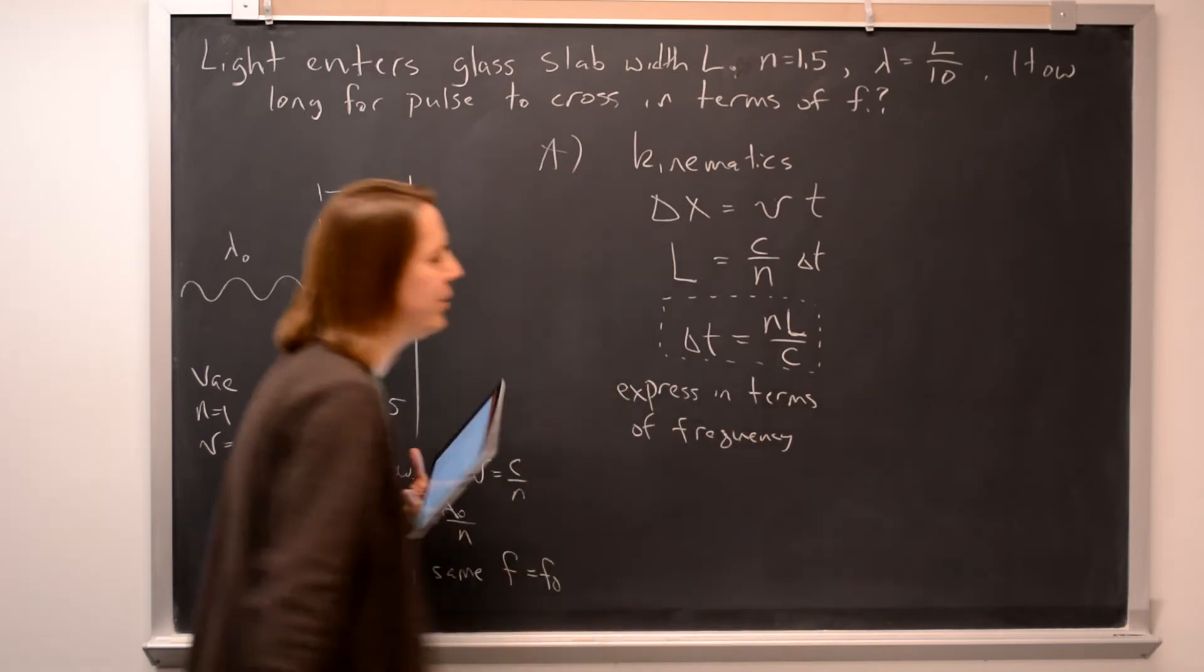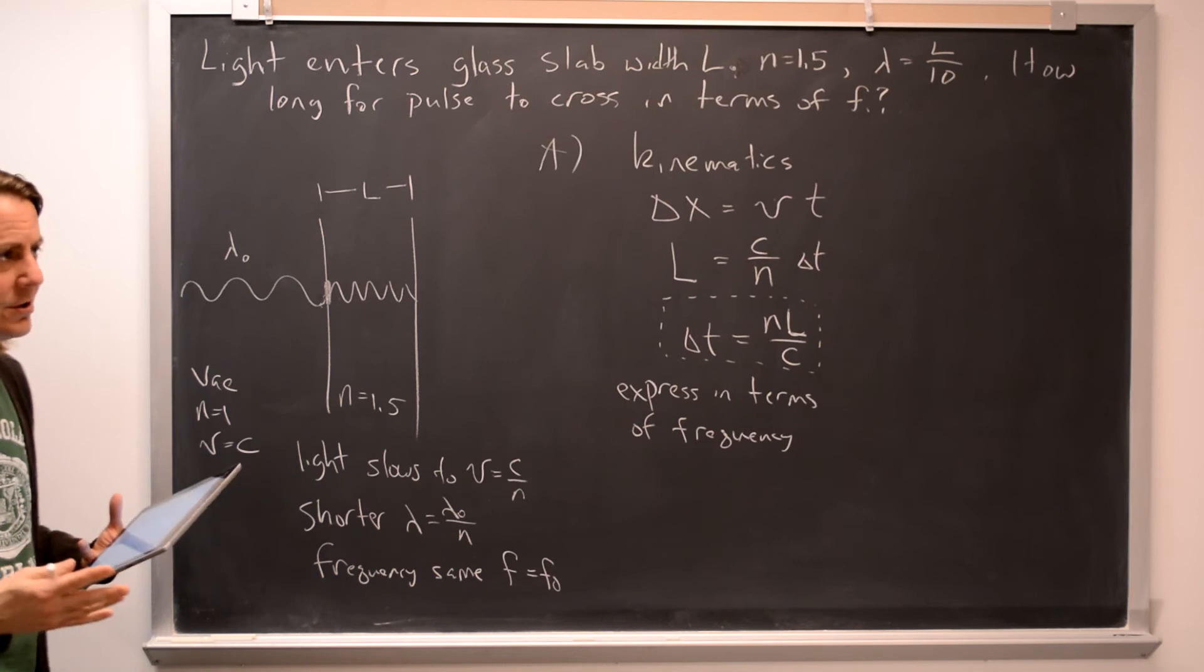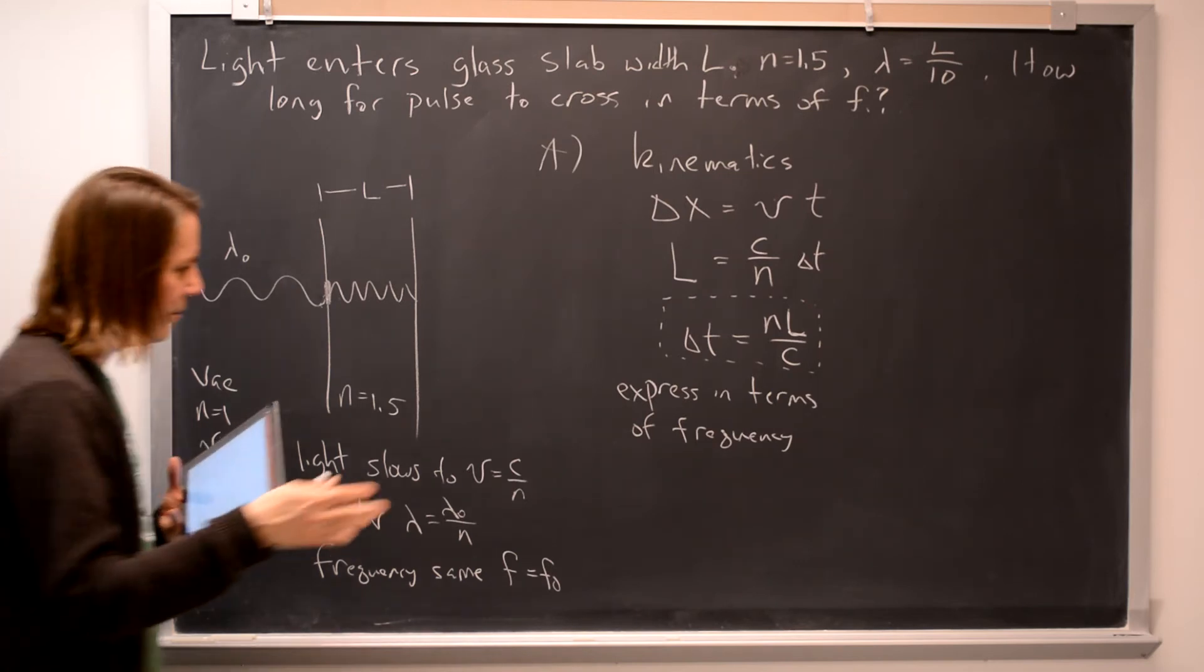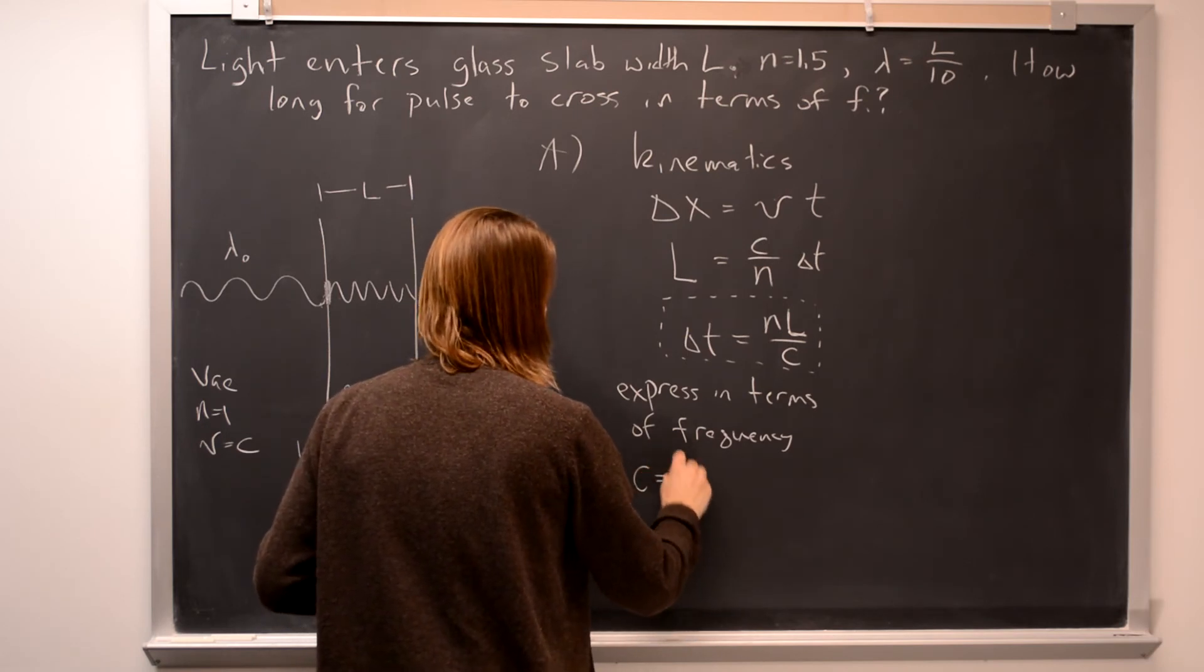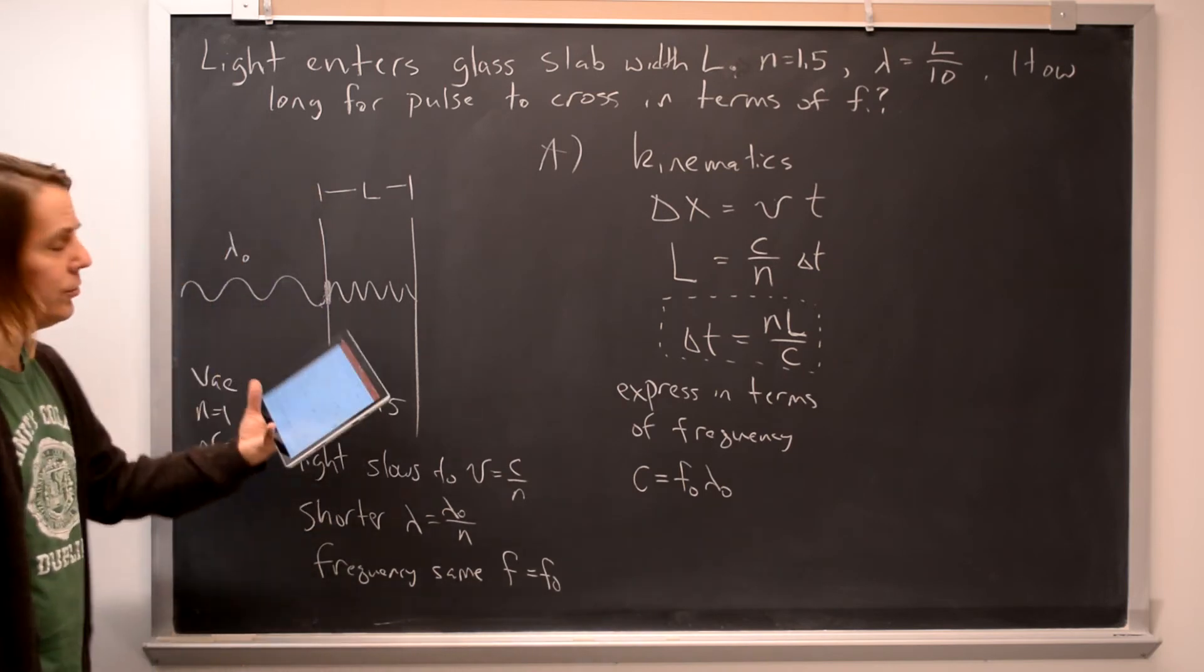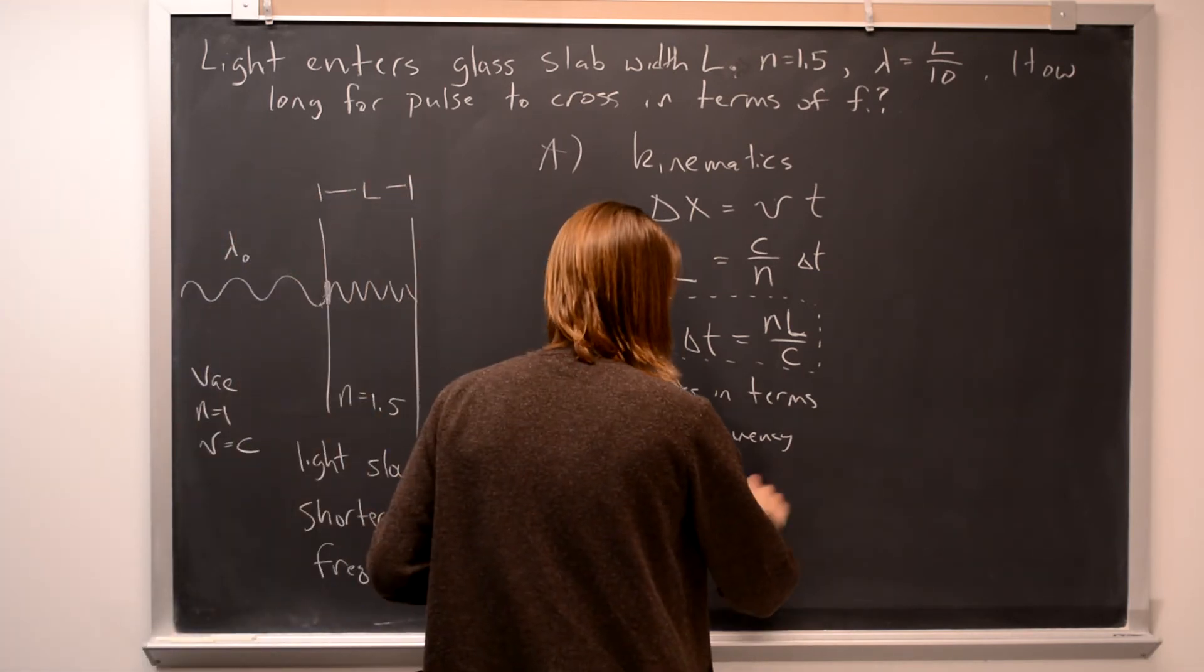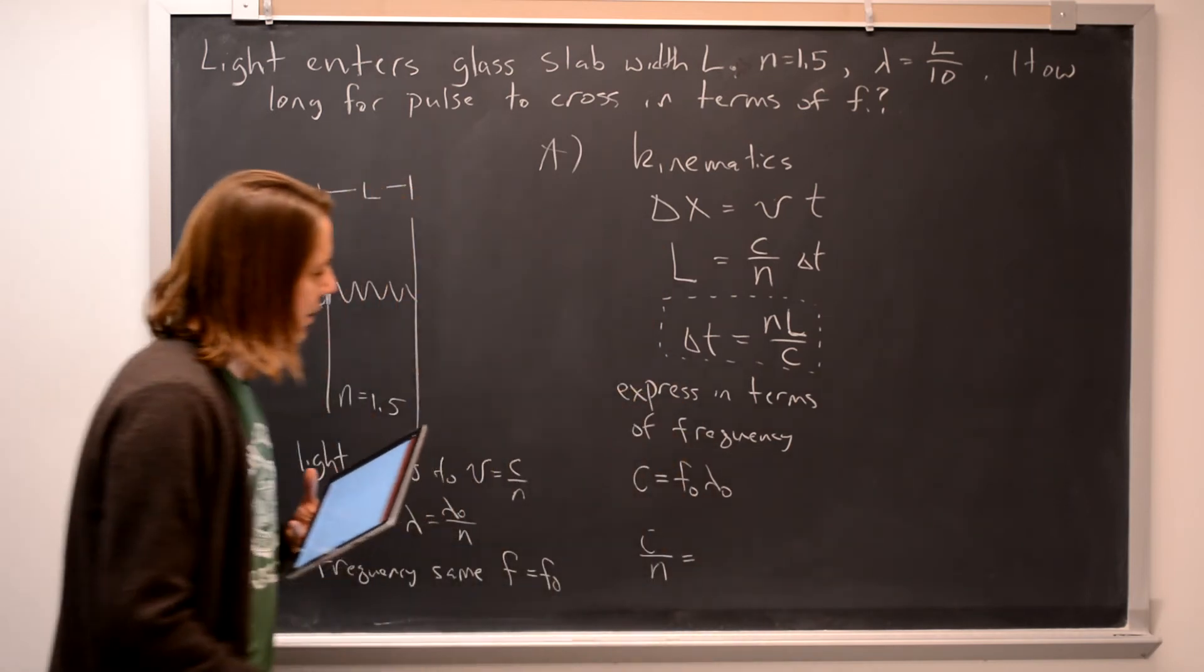So we were told nothing about the frequency, but we just have to use what we know. The standard relationship is speed equals the frequency times the wavelength. So in terms of in the vacuum region, C equals F naught times lambda naught. And it's also true in the material, in the glass,